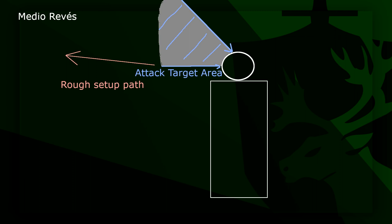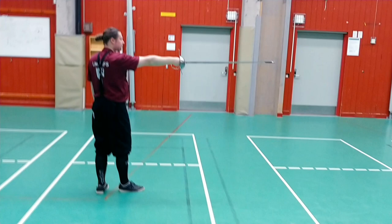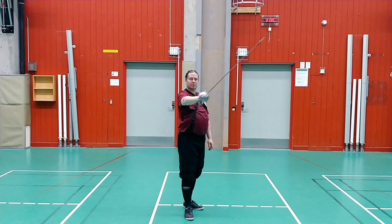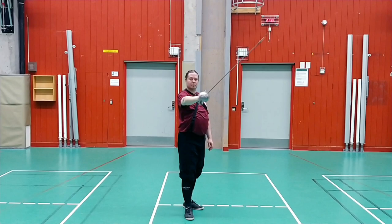Medio Revés is a cut on the outside — the left side for a right-handed fencer. It is more or less identical to the Medio Tajo but mirrored. Both Medio Tajo and Medio Revés often target the head and are delivered horizontally, but sometimes diagonally. At times both can also target the wrist.